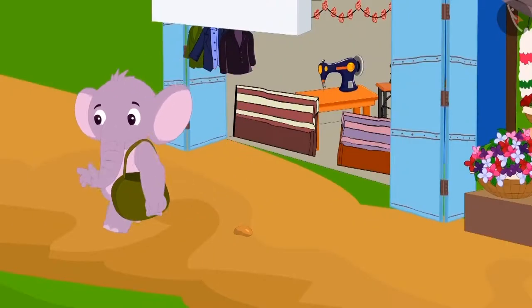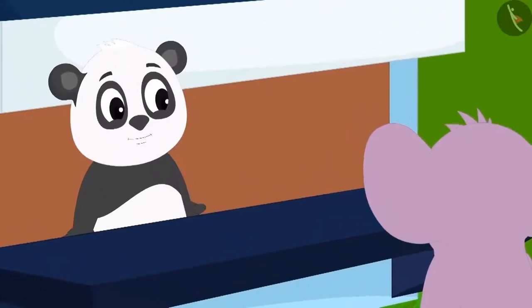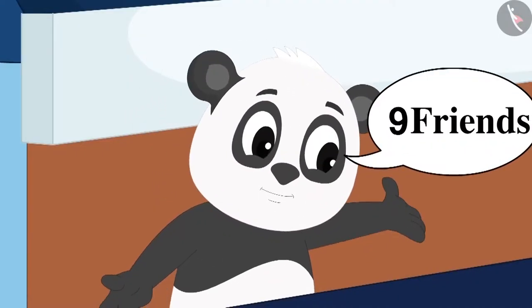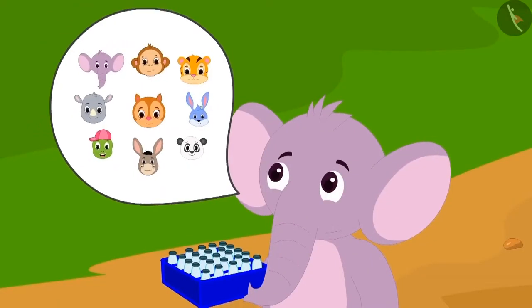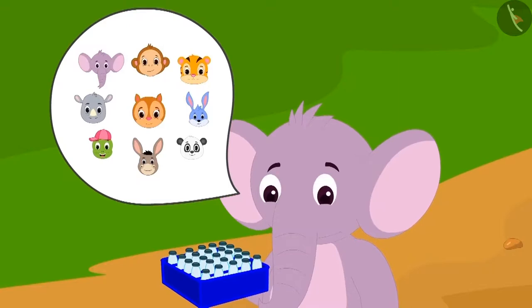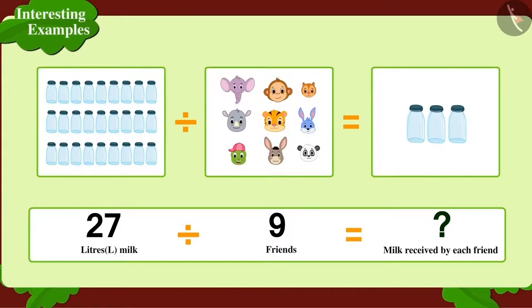Appu went to Golu's dairy to give him the fabric. Golu was delighted. He gave Appu 27 liters of milk, saying that all the 9 friends would equally share the milk and drink it. Children, can you tell how many liters of milk will each of Appu's friends get? Well done, children! You have found the right answer to this. Each of Appu's friends will enjoy 3 liters of milk.